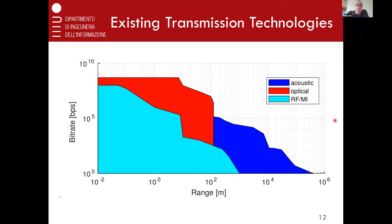If we ignore RF technology and assume the competing technologies are optical and acoustics, then you can see they clearly complement each other — for long range, your only choice is going to be acoustics, and for short range you can go with optical. If you have a requirement for high rate communication, then it's kind of necessary to go for optical, which sets some constraints on the distance between the two devices.